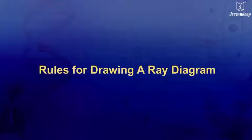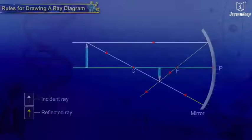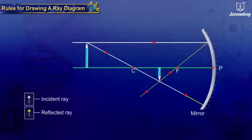Rules for drawing ray diagrams are based on laws of reflection. Images formed by a mirror can be studied with the help of a ray diagram.